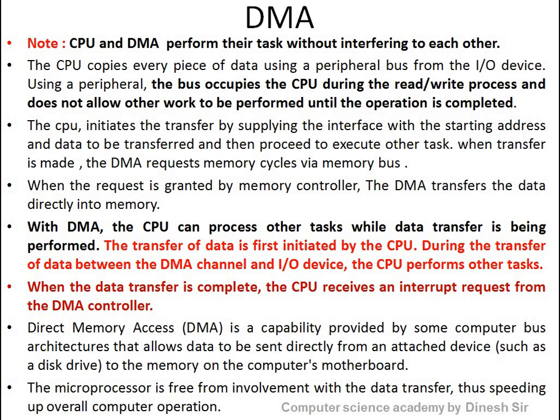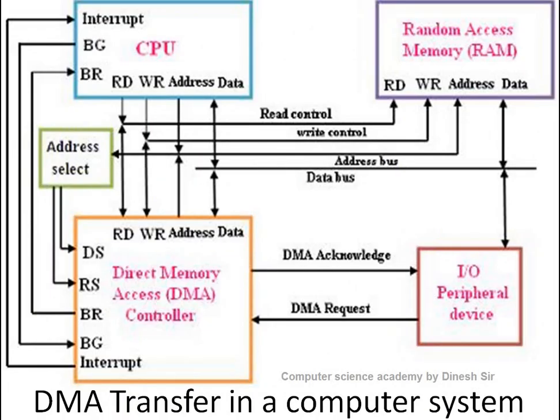We have already discussed what DMA is. Now, looking at the diagram of DMA, you can see four boxes. From left to right: the first box is the CPU, the second is memory — which we call RAM, the third is the DMA or Direct Memory Access Controller, and the fourth box is the input/output peripheral devices. These four boxes represent the complete system configuration and working architecture.